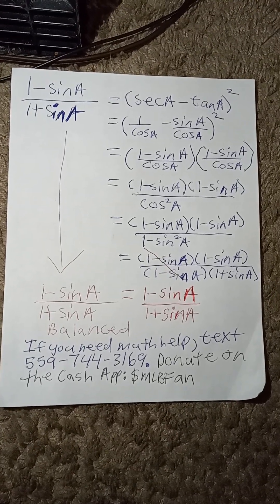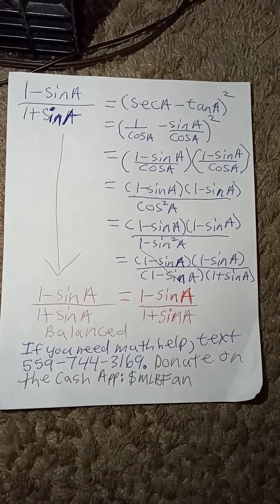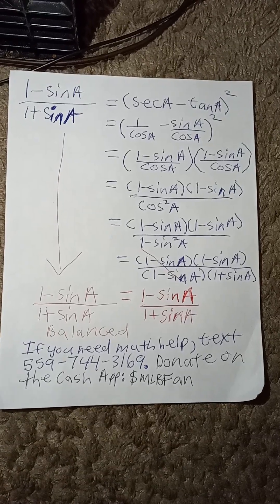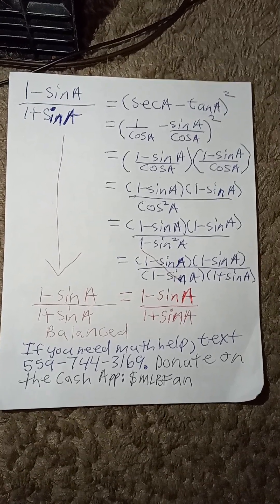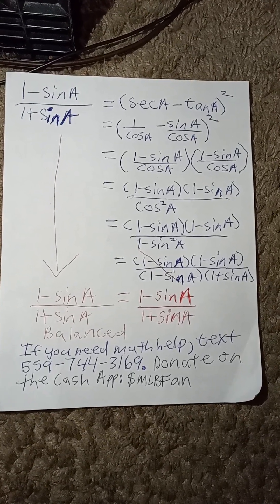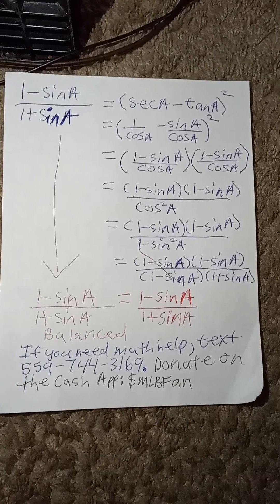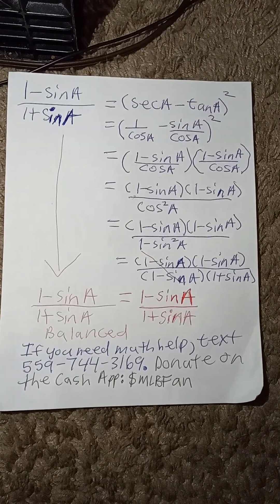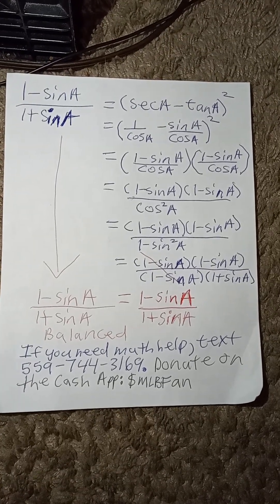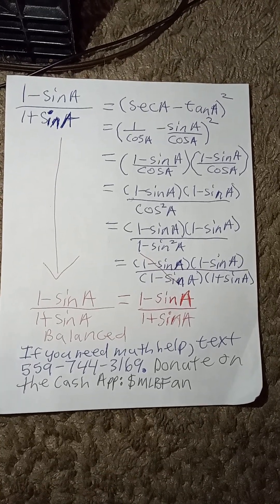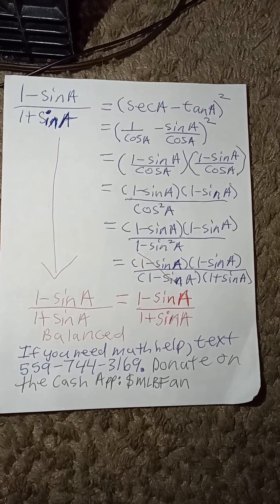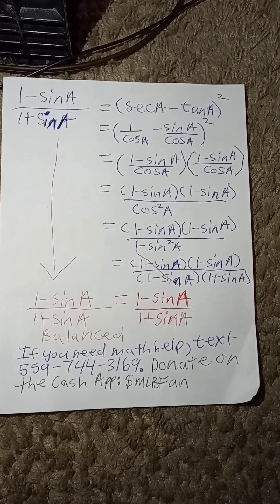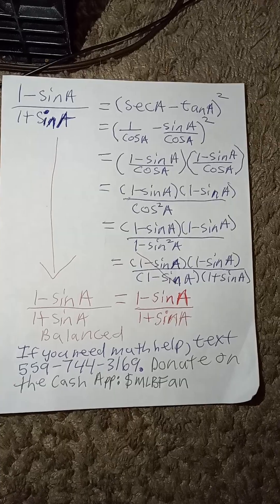So, let's maneuver the right-hand side. Secant a is equal to 1 divided by cosine a, minus tan a, which is equal to sine a divided by cosine a. And then square that, or raise it to the second power.